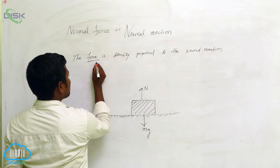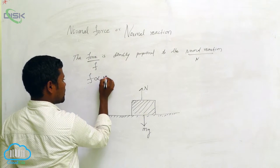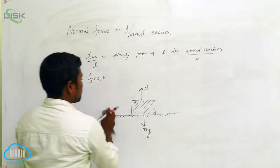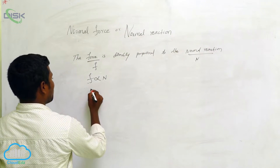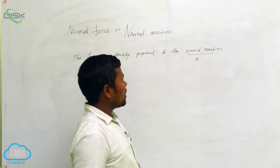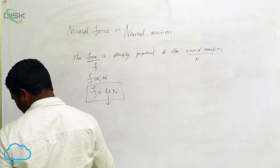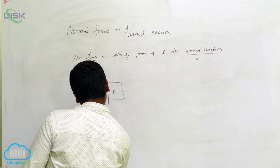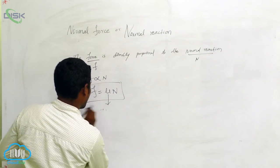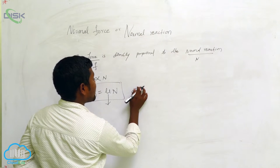From the definition we can write: force is directly proportional to the normal reaction. Force is small f, normal reaction is capital N, so we write f ∝ N. If more force is applied, more normal reaction will be there. Removing the proportional constant, we can write f = μN, where f is the force, N is the normal reaction, and μ is the coefficient of friction.